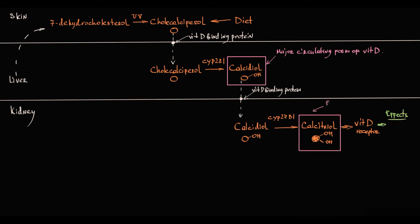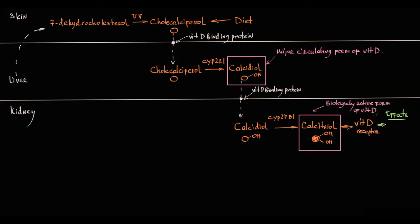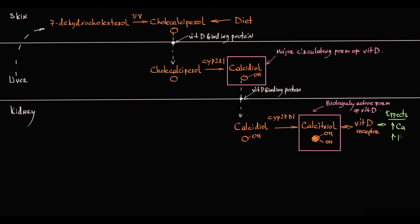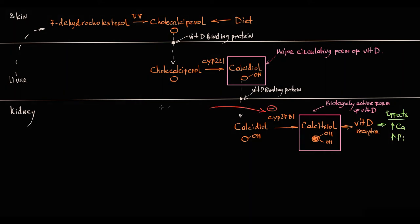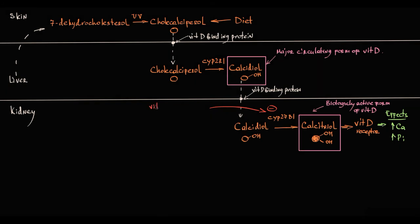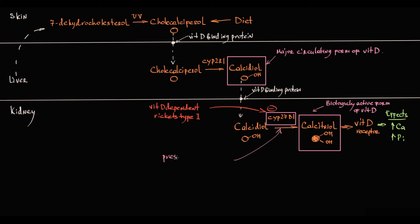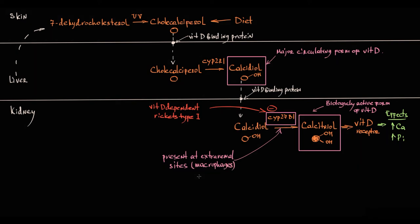To understand the regulation of vitamin D levels in the blood, we need to note the effects of calcitriol on calcium and phosphorus levels in plasma. Calcitriol stimulates calcium and phosphate absorption in the intestine and kidney, and also mobilizes calcium from bone tissue. So the net effect of calcitriol is an increase in serum calcium and phosphate levels. Any mutation that inactivates cytochrome P27B1 will cause vitamin D-dependent rickets type 1, also known as pseudovitamin D-deficiency rickets. Importantly, cytochrome P27B1 is also present at extrarenal sites — for example, macrophages also have this enzyme — and this is the reason for hypercalcemia in granulomatous diseases such as sarcoidosis and Crohn's disease.